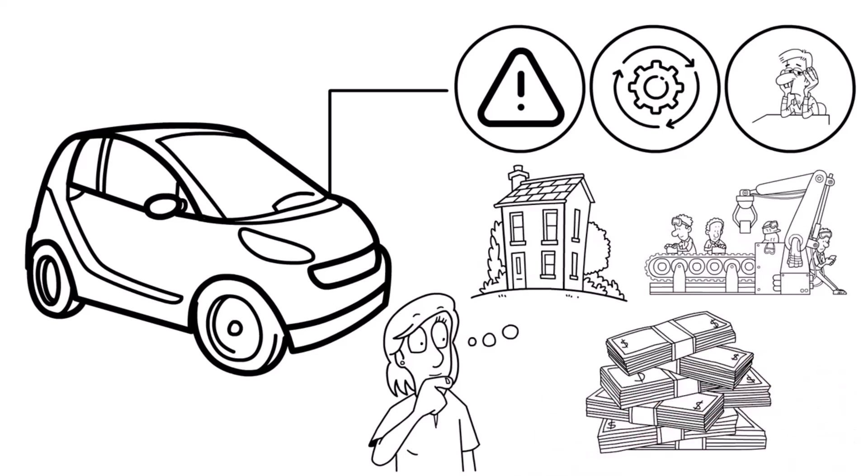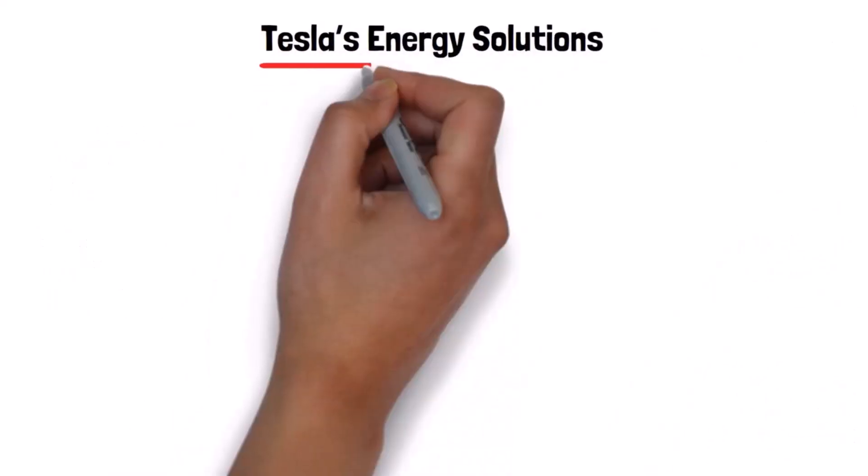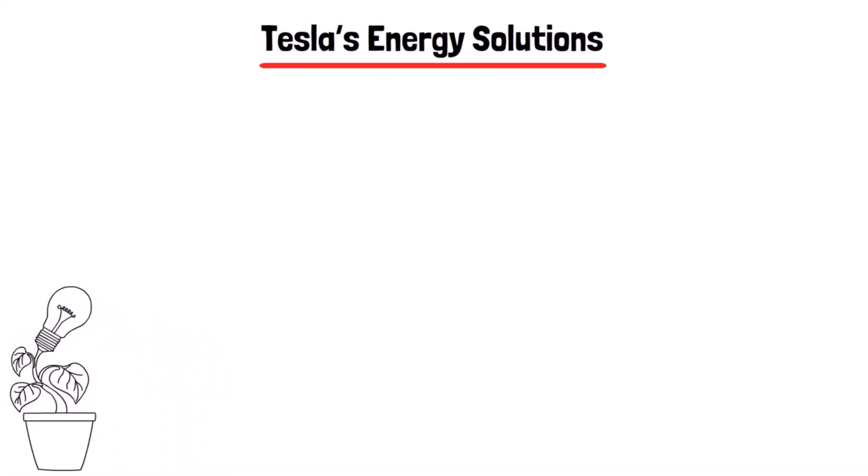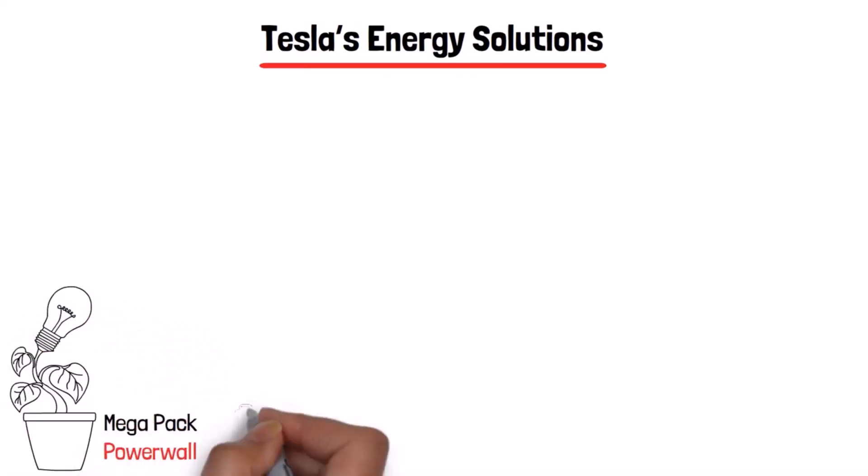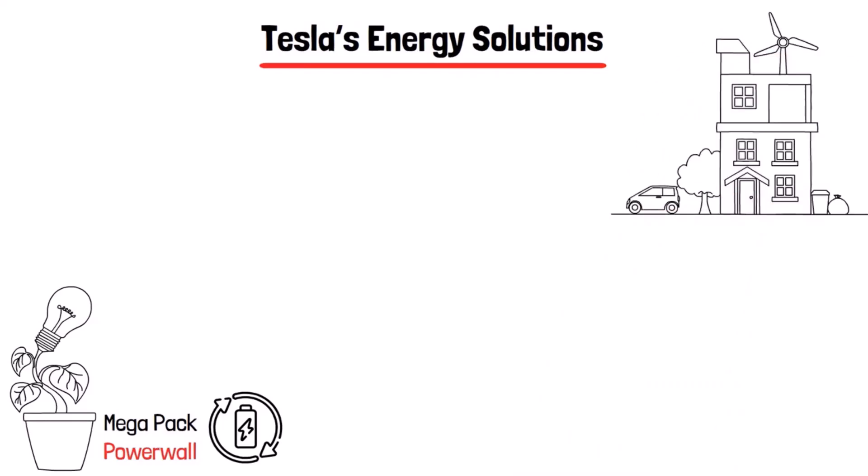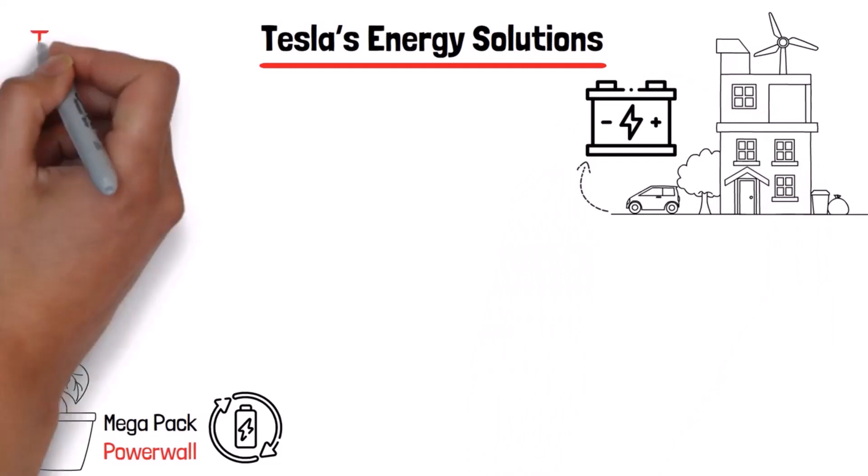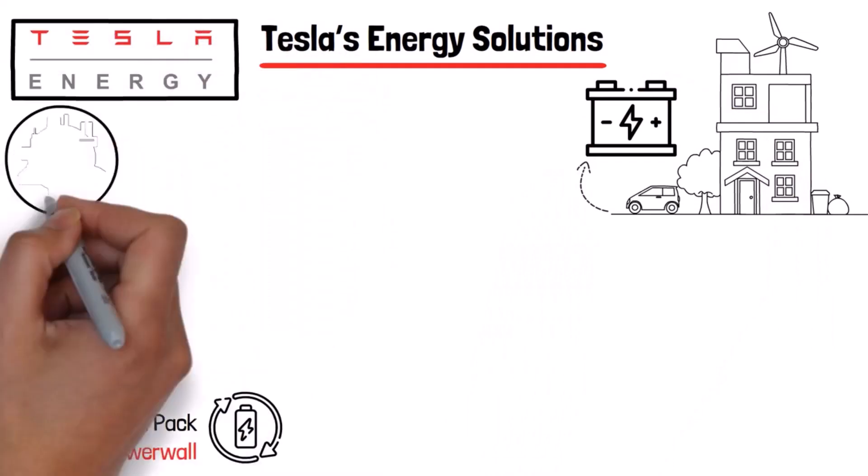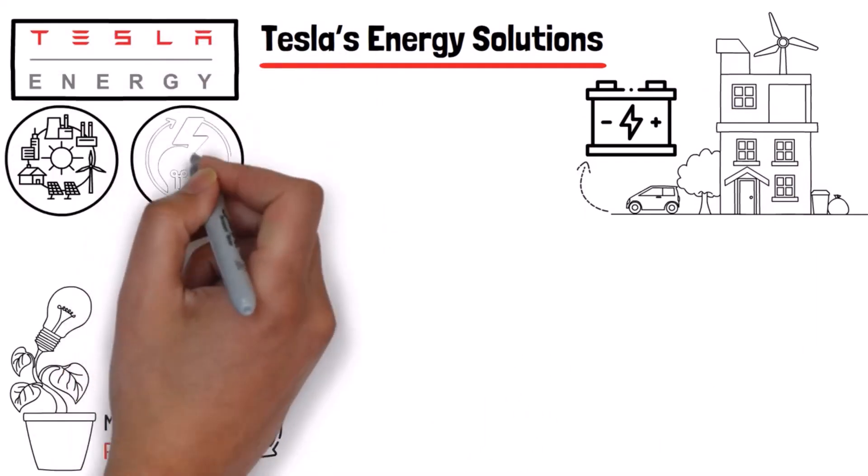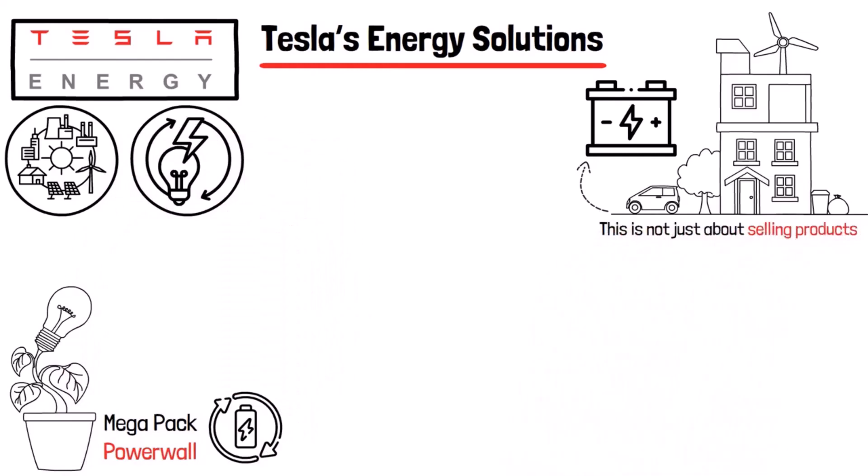Tesla's energy solutions deserve a spotlight too. The Megapack and Powerwall are game changers in the energy storage market. With the world moving towards renewable energy, the ability to store energy efficiently is crucial. Tesla's energy products help stabilize the grid and provide backup power during outages. This is not just about selling products, it's about creating a sustainable energy ecosystem.